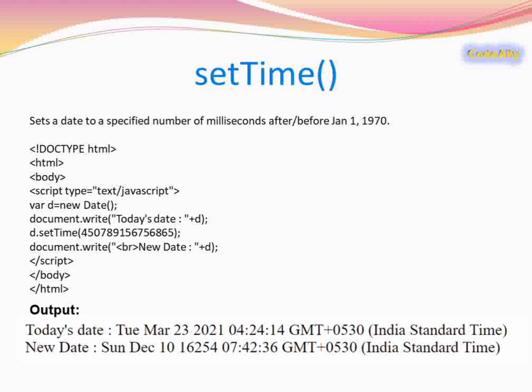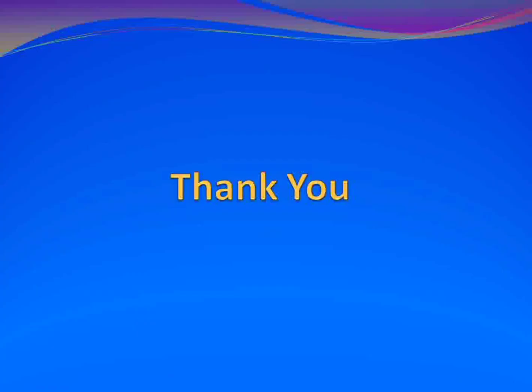The last method of the Date object is setTime(). It sets the date to a specified number of milliseconds before or after January 1st, 1970. Whatever value you specify, it counts that number of milliseconds from January 1st, 1970 and displays the corresponding date. Thank you for watching this video.